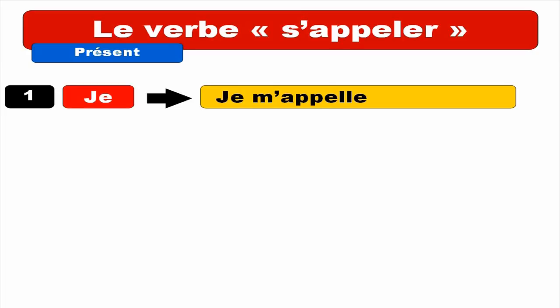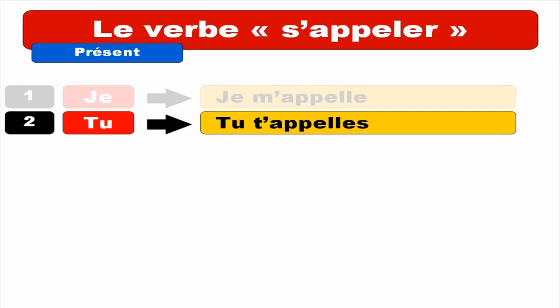Second form — same thing. For TU, the form is TU TE and then something. Here we start with a vowel, so the A disappears and we get TU T'APPELLES. Final S is not pronounced. TU T'APPELLES. Repeat.